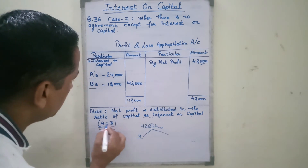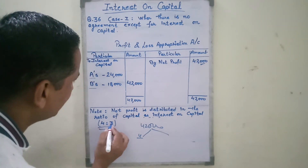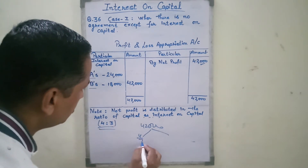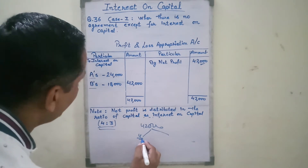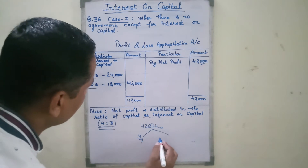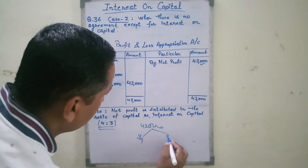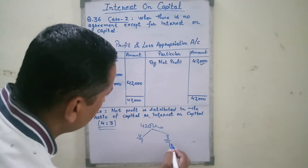The ratio is 4 to 3, and 4 plus 3 equals 7. So A gets 4/7 of 42,000 and B gets 3/7 of 42,000.